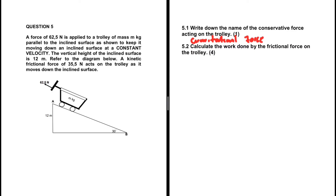That is 5.1. Let's take a look at 5.2: calculate the work done by the frictional force on the trolley. A force of 62.5 newtons is applied to a trolley of mass m kg, parallel to the inclined surface, to keep it moving down the inclined surface at a constant velocity. The vertical height of the inclined surface is 12 meters, and a kinetic frictional force of 35.5 newtons acts on the trolley as it moves down the incline.